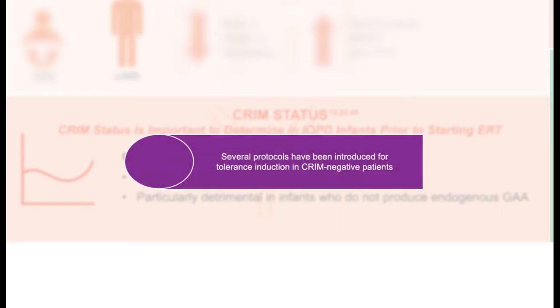In a retrospective study of the influence of CRIM status on outcomes in patients receiving alglucosidase alfa, all of the CRIM-negative patients were deceased or ventilated by 27 months. As a result of this observation, several protocols have been introduced for induction of immune tolerance in patients who are CRIM-negative.